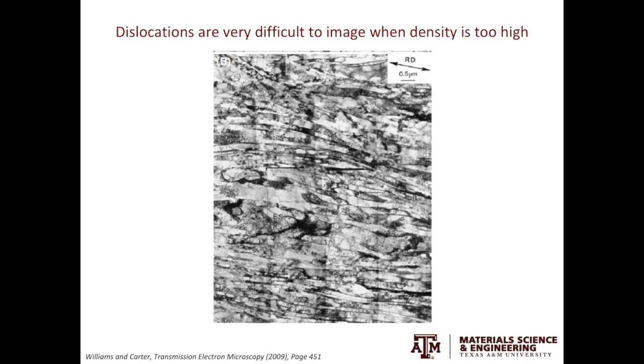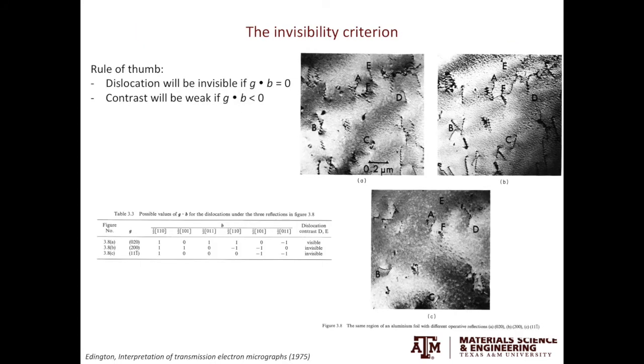One challenge in dislocation imaging we usually face is when the dislocation density is too high. This happens when the metal has undergone cold rolling. When there's a lot of plastic strain stored in the material, dislocations will self-organize to form cell-like structure. To image individual dislocations is nearly impossible.